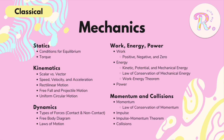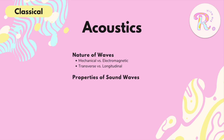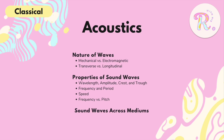Our last topic under mechanics is momentum and collisions — the law of conservation of momentum, impulse, and the impulse-momentum theorem, as well as your types of collisions. Moving on to acoustics, which is basically just your waves and sound: the nature of waves, the difference between mechanical versus electromagnetic waves, transverse versus longitudinal waves, properties of sound waves including wavelength, amplitude, crest and trough, frequency and period, speed, and the difference between frequency and pitch. We also cover how sound waves travel across different mediums.